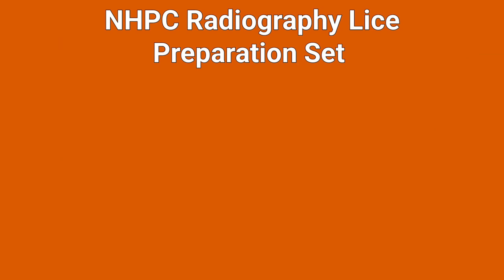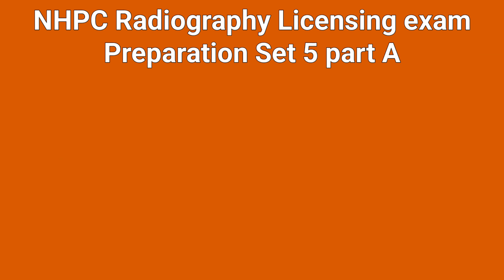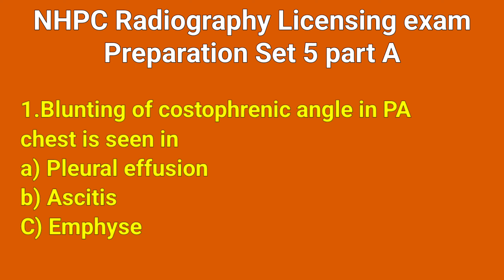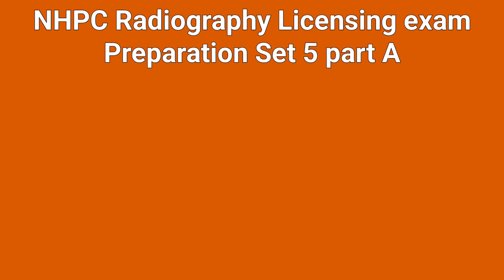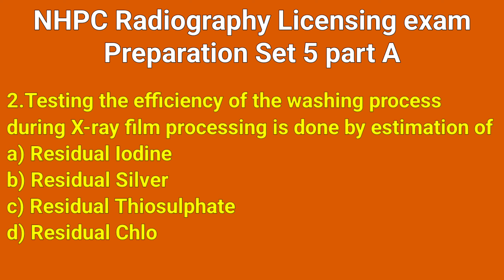HPC radiography licensing exam preparation, Set 5, Part A. Question number 1: Blunting of costophrenic angle in chest X-ray is seen in which option? Correct answer: option A, pleural effusion.